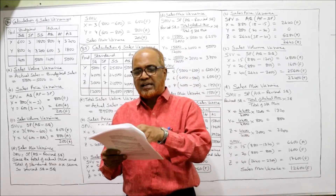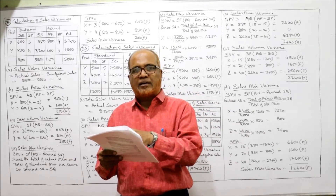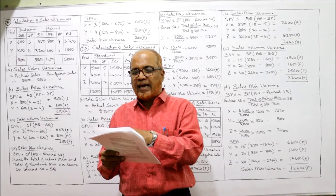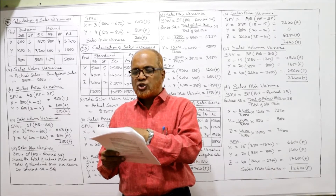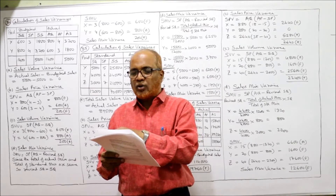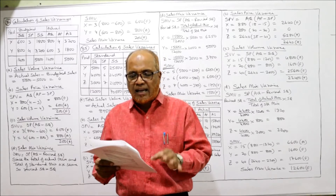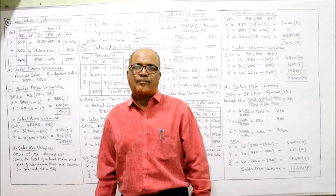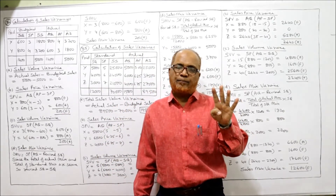600 into 3 equals 1,800; 800 into 4 equals 3,200. Similarly, actual quantity: 800 for X, 600 for Y. Actual price: 4 and 3. Multiply: 800 into 4 equals 3,200; 600 into 3 equals 1,800. Calculate sales variance — it's very easy. Three to four formulas we will apply. The first formula: total sales value variance.